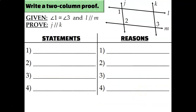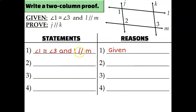In our next diagram, we have two sets of lines. I'm told that line L is parallel to line M, and I'm trying to prove that line J is parallel to line K. It's important to distinguish at the very beginning which lines you know are parallel and which ones you're trying to prove are parallel. Right now I don't know that J and K are parallel, so I can't use anything that references J and K being parallel — the point of this proof is to show why they must be. So let's write down our given: angle 1 is congruent to angle 3, and line L is parallel to line M.